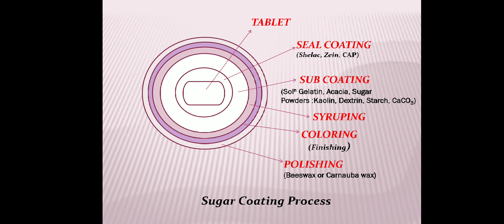In the diagram for sugar coating, we can see a tablet core coated by seal coating using shellac, zein, or CAP (cellulose acetate phthalate). Then sub coating with sugar solution containing gelatin, acacia, sugar powders, kaolin, dextrin, starch, or calcium carbonate. Then syruping where dilute syrup is applied to give smoothness. Then coloring where colored dilute syrup is applied, and finally polishing with beeswax and carnauba wax in a canvas cloth-lined coating pan. That is all about sugar coating.